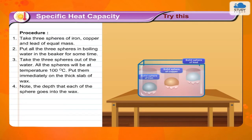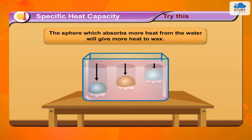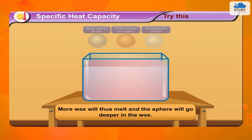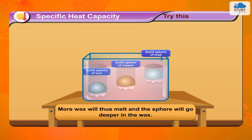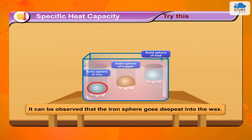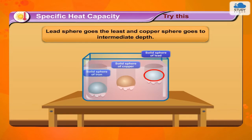Step 4 — Note the depth that each of the spheres goes into the wax. Step 5 — The sphere which absorbs more heat from the water will give more heat to the wax. More wax will thus melt and the sphere will go deeper into the wax. It can be observed that the iron sphere goes deepest into the wax. Lead sphere goes the least, and the copper sphere goes to intermediate depth.